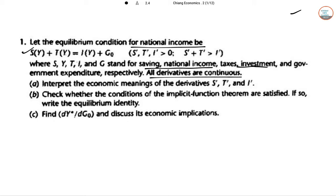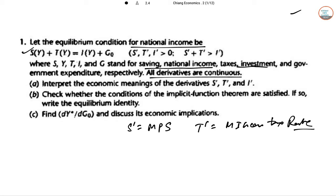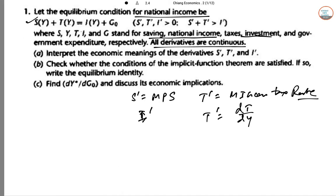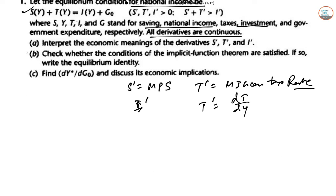Interpret the economic meanings of S', T', and I'. S' is the marginal propensity to save. T' is the marginal income tax rate — that is, if income increases by one unit, T' is dT/dY, the effect on taxes. I' is the marginal propensity to invest — that is, the change in investment when income changes.